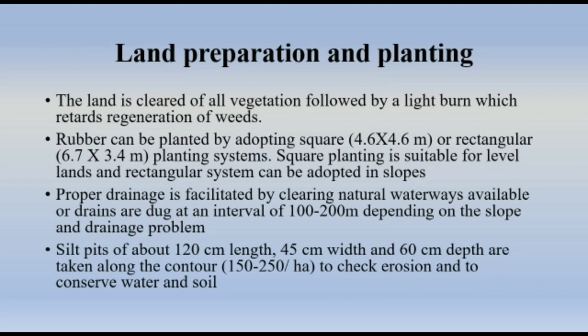Land preparation and planting: The land is cleared of all vegetation followed by a light burn, which retards regeneration of weeds. Rubber can be planted by adopting a square system of 4.6 × 4.6 meters or a rectangular system of 6.7 × 3.4 meters. Square planting is suitable for level lands and the rectangular system can be adopted on slopes.